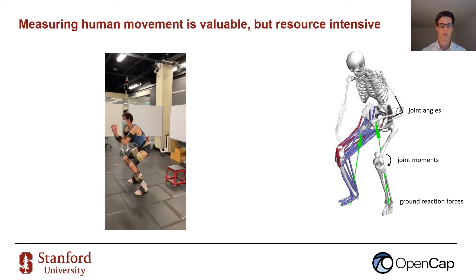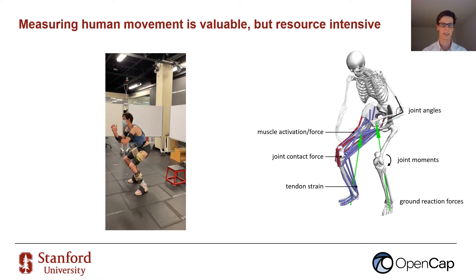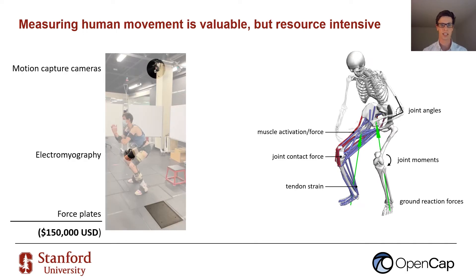In the motion capture lab we can estimate kinematic and kinetic measures like joint angles and moments. We can also generate a muscle-driven simulation to estimate things like muscle force or joint loading. These measures are insightful, but the process is resource intensive. The equipment used in the lab costs around $150,000 and collecting, processing, and simulating data can take an expert hours to several days.